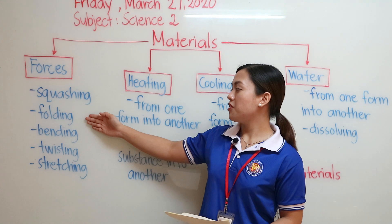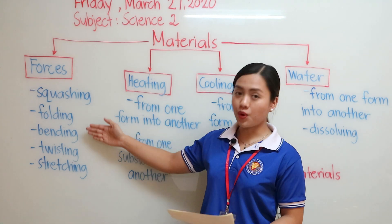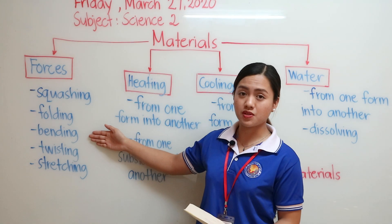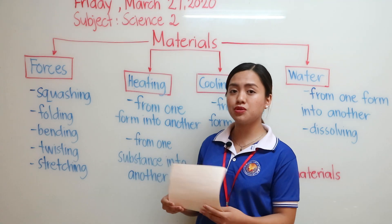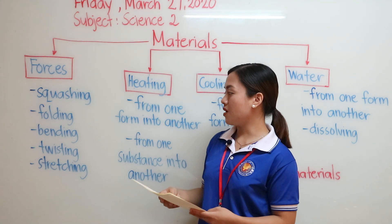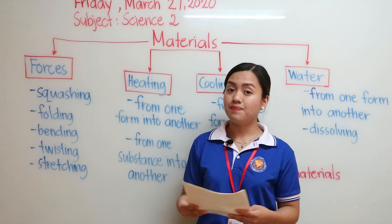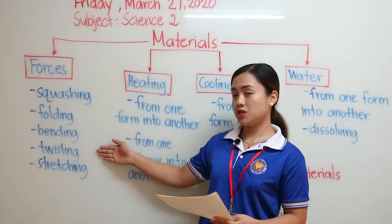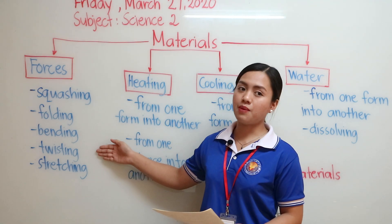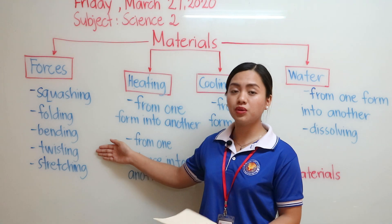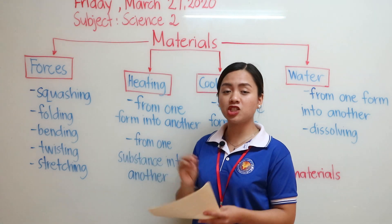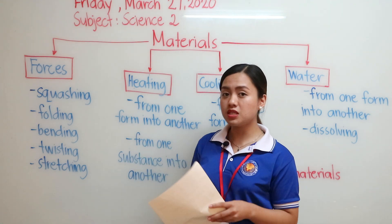Another type of force change is folding or bending. For example, we have paper — we can fold it into pieces or we can also bend it. Another one is twisting. For example, thread or the dough that we are baking — before we bake it we can actually twist it.